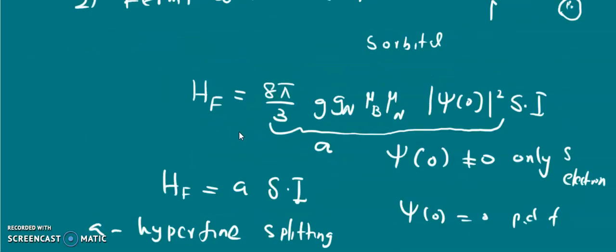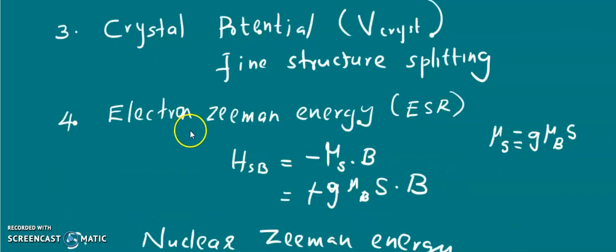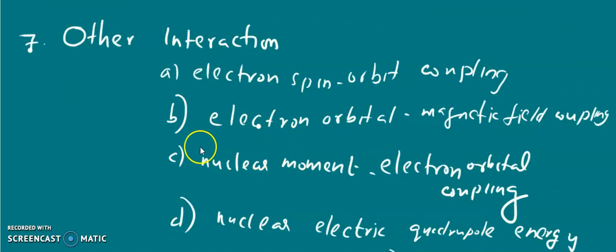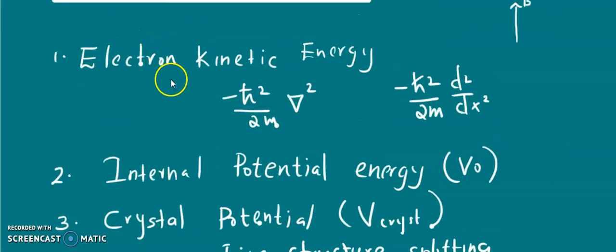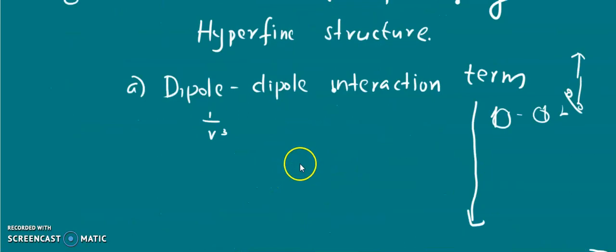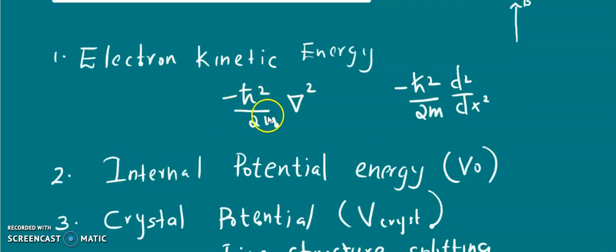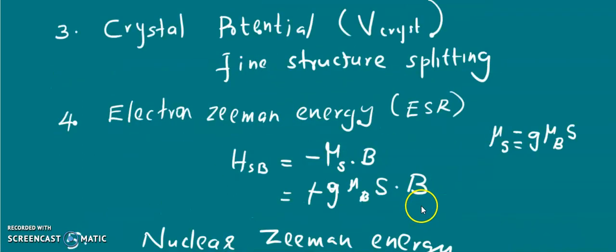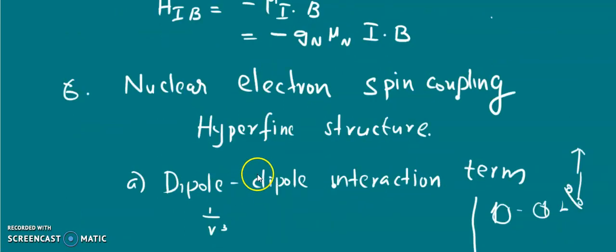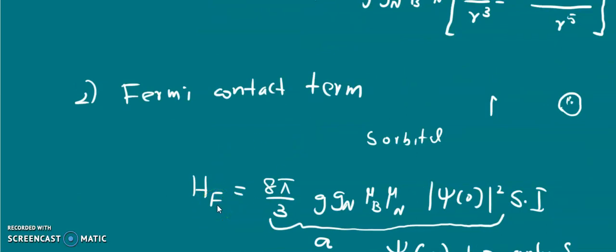In most cases the total Hamiltonian is the sum of the six main contributions: H_kinetic + V0 + V_crystal + H_SB + H_IB + H_dipole + H_F. The additional interaction terms are neglected due to their small magnitude. For some materials, certain terms will be zero and the expression for the Hamiltonian simplifies accordingly.